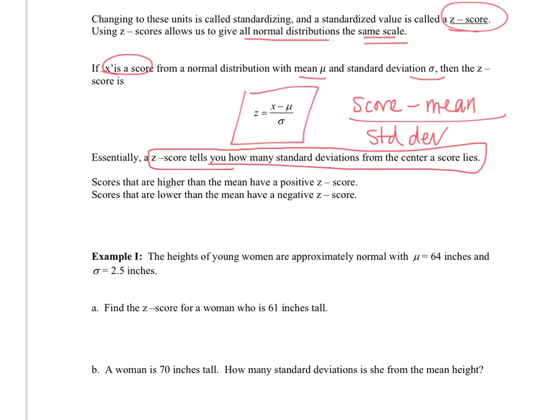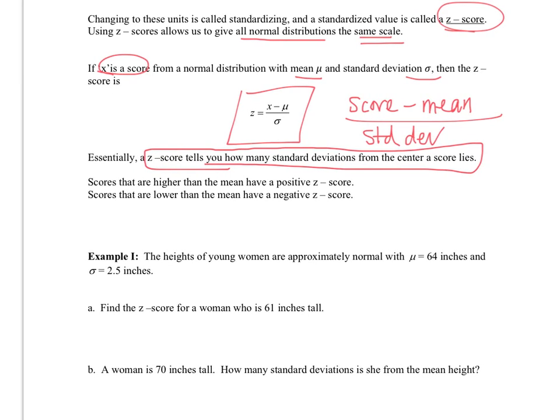The z-score helps put your score in context by comparing it to the mean and standard deviation. Scores that are higher than the mean have a positive z-score and scores that are lower than the mean have a negative z-score. That's because of the numerator where we are subtracting score minus the mean.